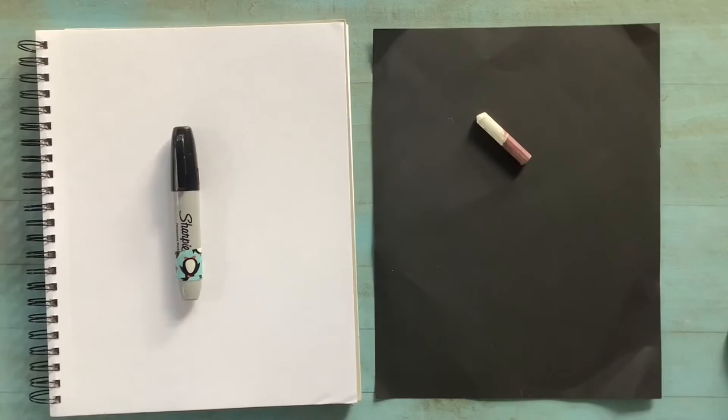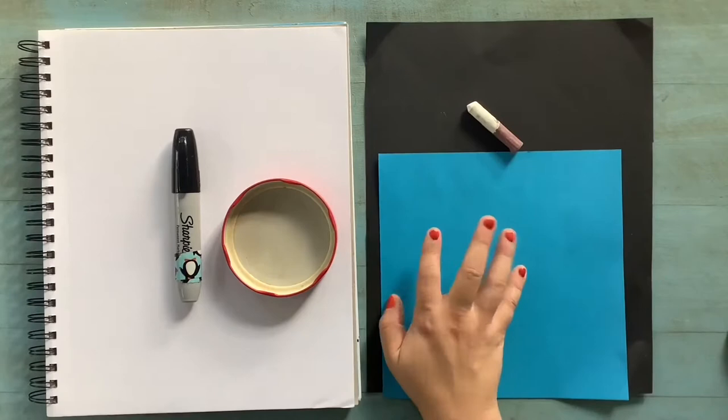You will also want to have something shaped like a circle so that you can use it to trace the circle that you will need for your spider. I'm using this blue paper,